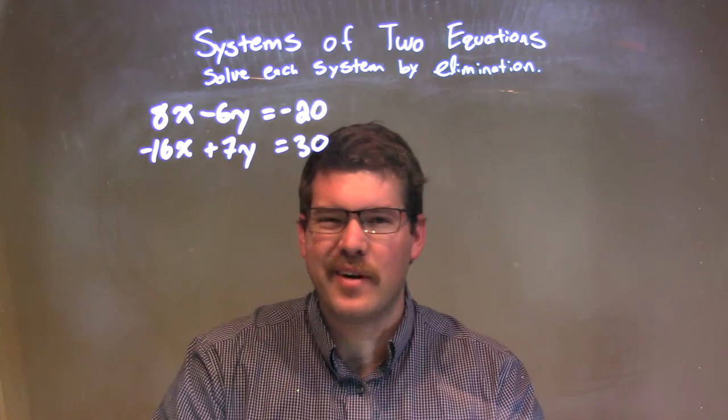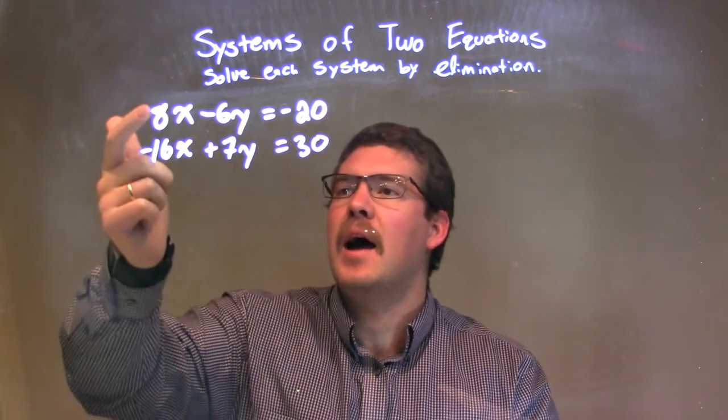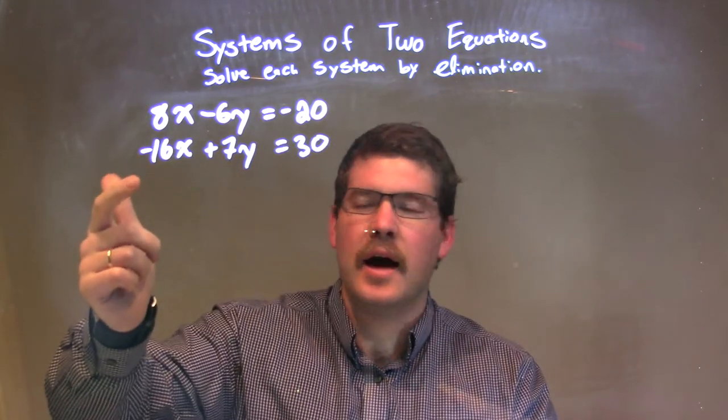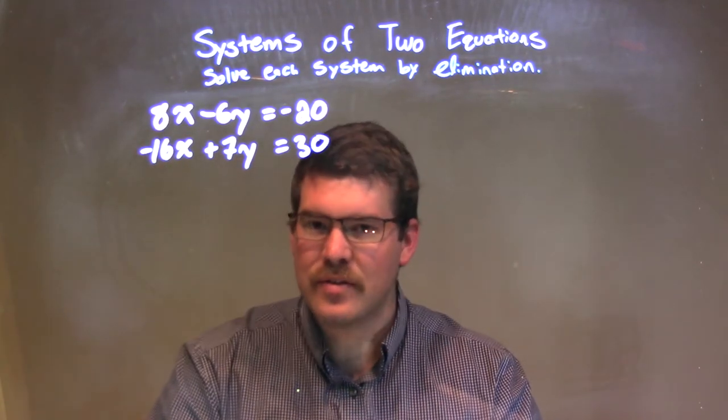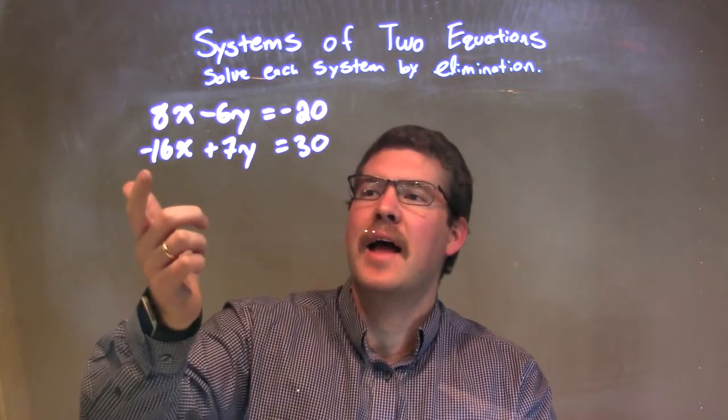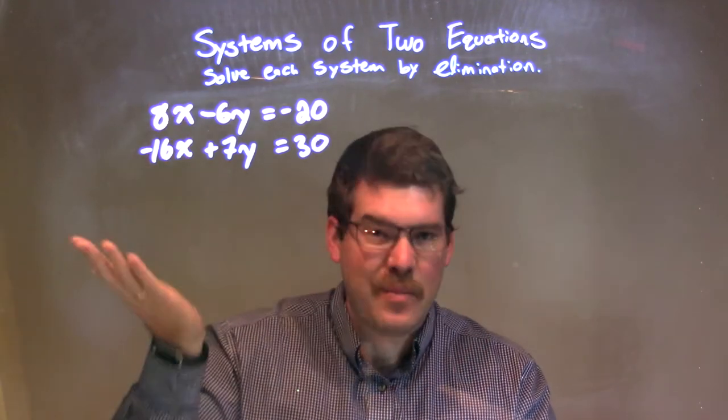And so, I'm kind of looking for opposites in a sense here, and I see 8x and negative 16x, and I know that if I multiply 8x by 2, I'd get a positive 16x, and I could add that to negative 16x, and that becomes 0. That's the ultimate goal there.